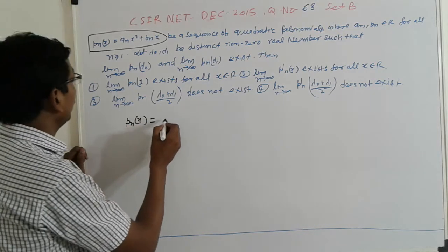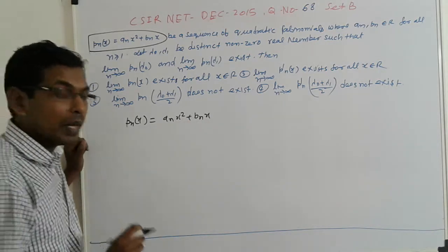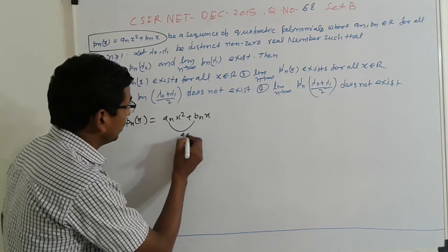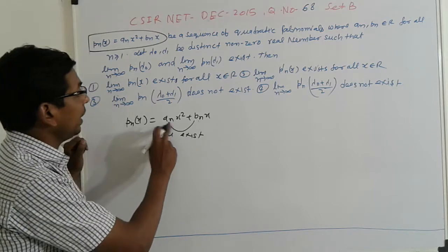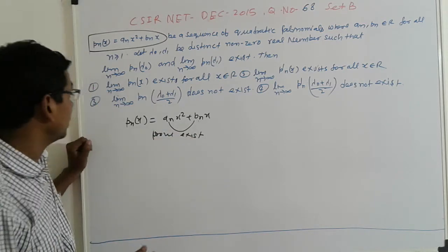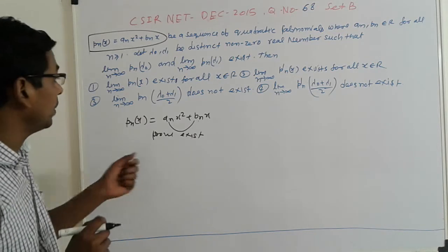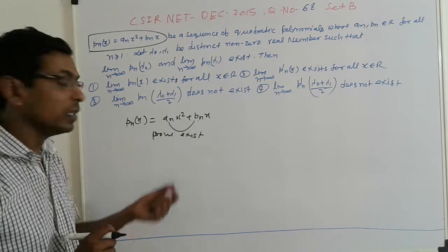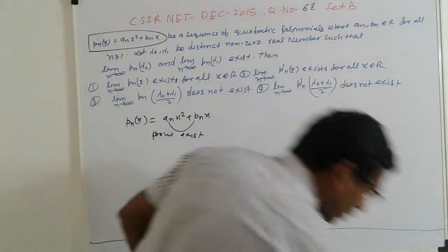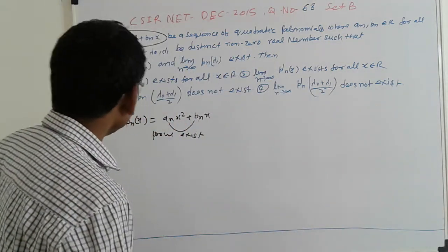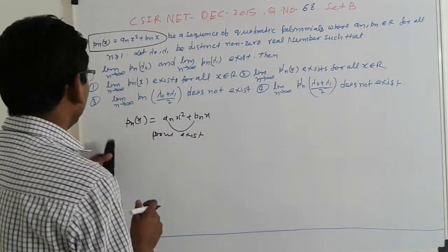So here p_n(x) = a_n·x² + b_n·x. We need to prove that a_n and b_n exist (converge). If a_n and b_n exist, then p_n(x) exists. So we need to find the values of a_n and b_n in terms of the lambdas λ₀ and λ₁.